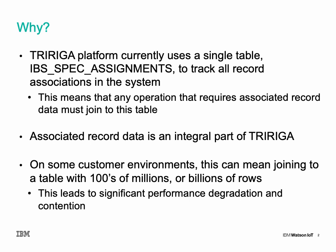Associated record data is an integral part of TriRiga. Take, for example, a lease record, which is a fundamental TriRiga functionality. In order for that lease to function, it has to have associations to tons of different types of data — the tenant record, the landlord record, the building being rented, payment line items, clauses, and amendments. It can account for literally hundreds or even thousands of record associations just for that single entity.